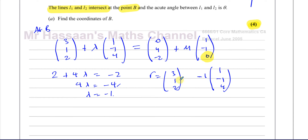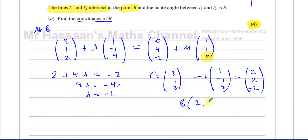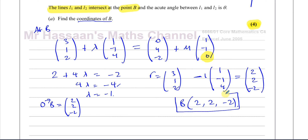Substituting λ = −1: (3, 1, 2) + (−1)(1, −1, 4) = (3−1, 1+1, 2−4) = (2, 2, −2). So the coordinates of point B are (2, 2, −2). If the question asked for a position vector we'd write it as OB = (2, 2, −2), but since it asks for coordinates, we write B = (2, 2, −2).